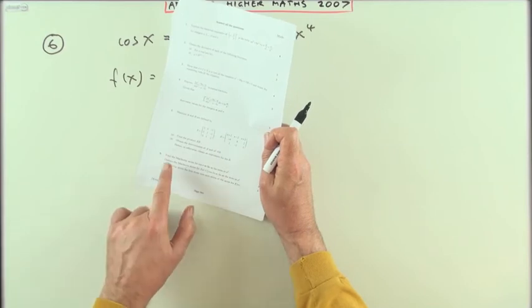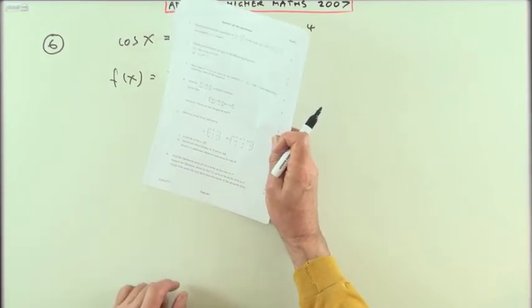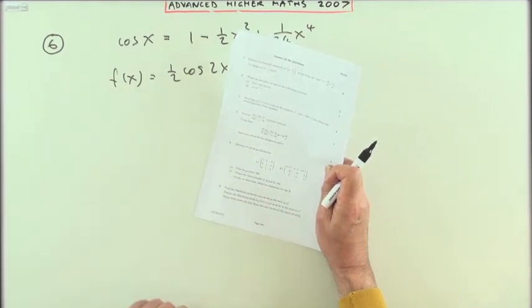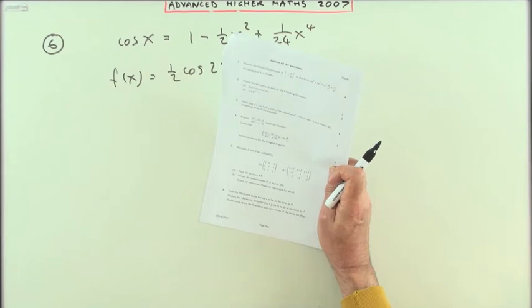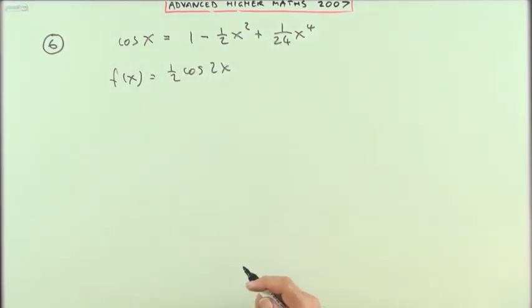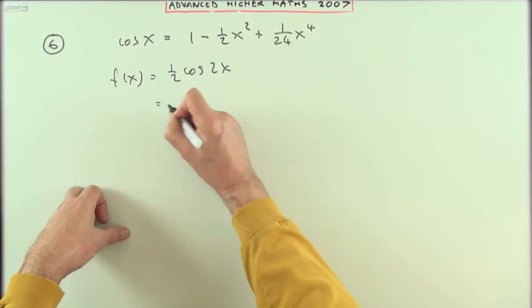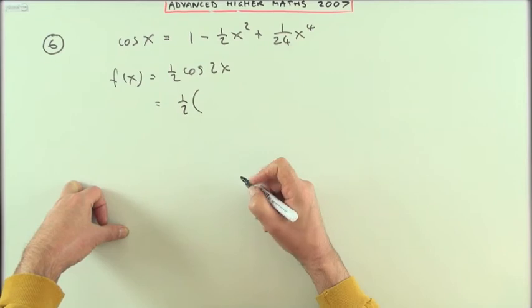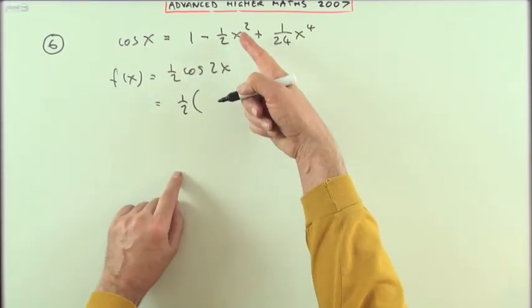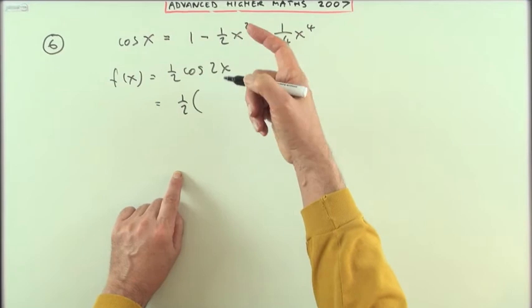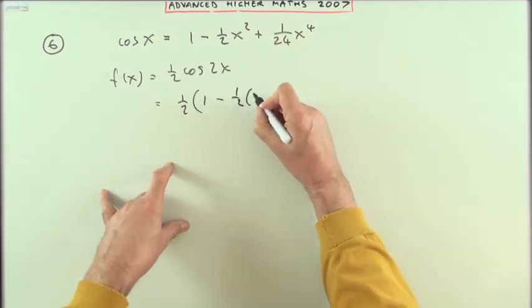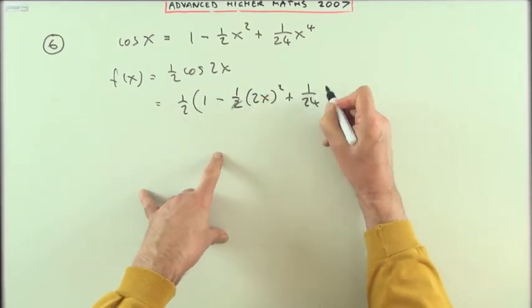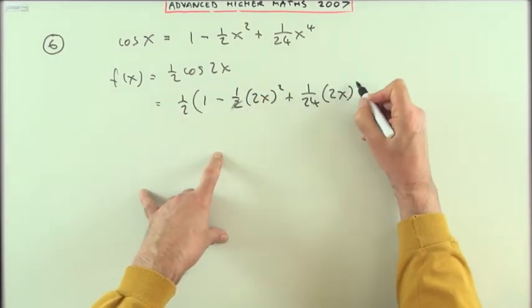The second part says deduce the MacLaurin series for f of x equals 1 half cos 2x. Just as well I removed that previous part, because this is the real f of x here. That other one was bogus, just a temporary convenience. As far as the term in x to the 4, that simply means I take this: here's the cos of x. If I want a half of cos, I'll have a half of that. But that's cos of x, I want cos of 2x, so you just replace each of the x's by 2x. So 1 minus a half of 2x squared plus 1 24th of 2x to the power of 4.